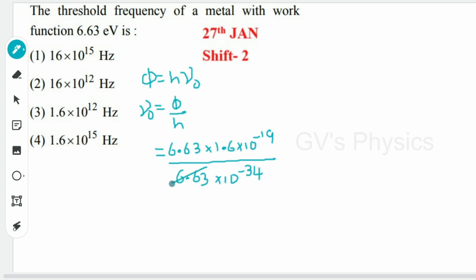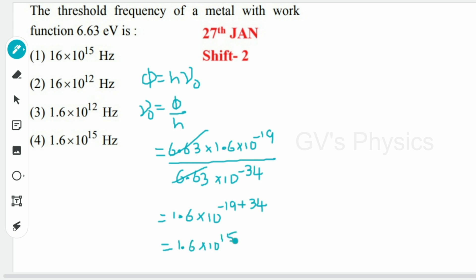Substituting: 6.63 × 1.6 × 10⁻¹⁹ divided by h = 6.63 × 10⁻³⁴. The 6.63 values cancel. The balance is 1.6 × 10⁻¹⁹, and taking 10⁻³⁴ to the numerator it becomes +34. So the result is 1.6 × 10¹⁵ hertz — this is the threshold frequency ν₀. Checking the options: option 4 is the right answer.